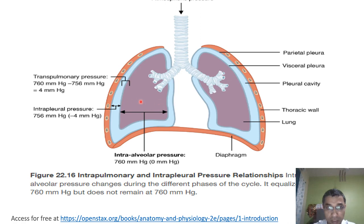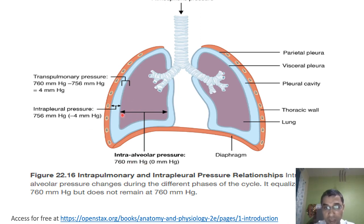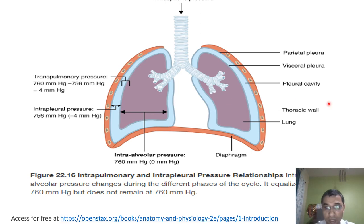Trans-pulmonary pressure is the pressure difference between alveolar pressure and pleural pressure. Intra-alveolar pressure is the pressure within the alveoli. Intra-pleural pressure acts between the pleural membrane of the alveoli and the pleural membrane of the chest wall. In this thin space, pleural fluid is present, which protects the lungs as very sophisticated organs.